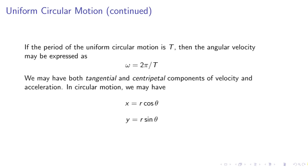If the period of the uniform circular motion is t, then the angular velocity may exist as omega equals 2 pi over t. We may have both tangential and centripetal components of velocity and acceleration. In a circular motion, we may have x equals r cosine theta, y equals r sine theta.